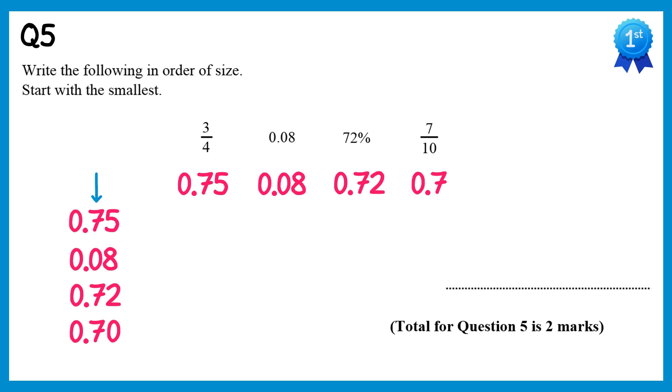In the next column they're all 7s, apart from one of them is a 0, so that one with the 0 must be the smallest number. So 0.08 is our first number, and we'll cross it out. Now I'll move on to the last column. Here we have a 5, a 2 and a 0, so the one with the 0 must be the smallest, 0.7, but remember in the question that was equal to 7 tenths. So write 7 tenths next, and cross that one out.